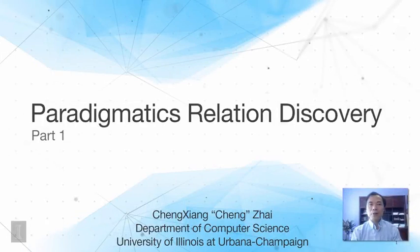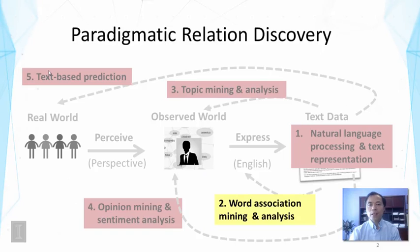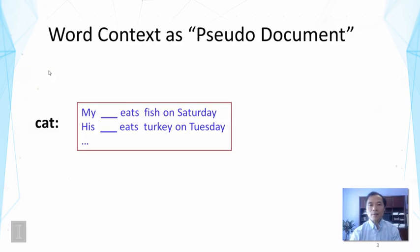This lecture is about paradigmatic relation discovery. We are going to talk about how to discover a particular kind of word associations called paradigmatic relations. By definition, two words are paradigmatically related if they share similar contexts, namely they occur in similar positions in text. Our idea for discovering such relations is to look at the context of each word and then compute the similarity of those contexts.